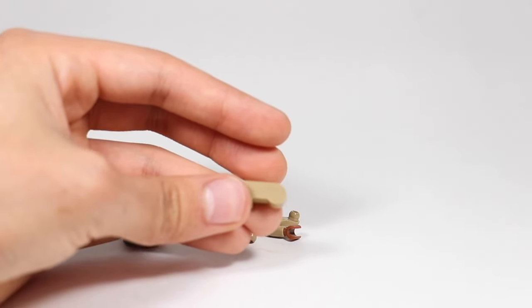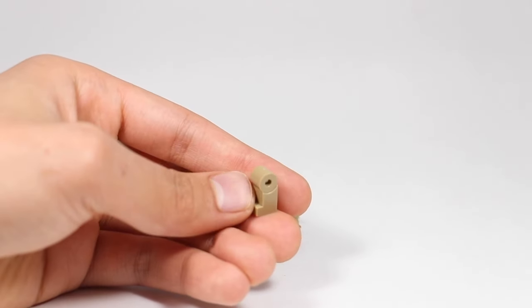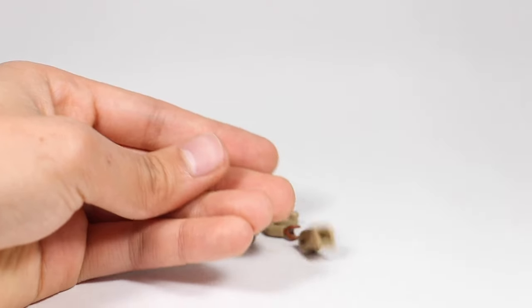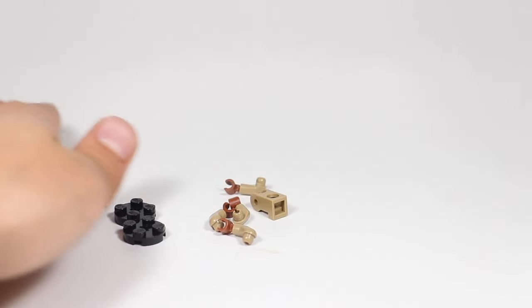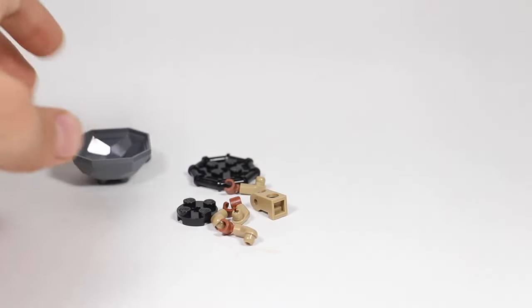And last but not least, it doesn't matter which side, left or right, but you'll need a minifigure leg. Once again I'm using beige, and this is going to represent the turtle's head or the tortoise's.